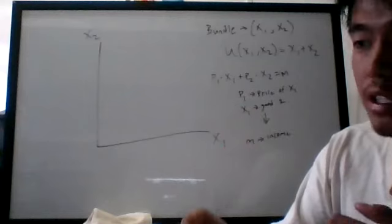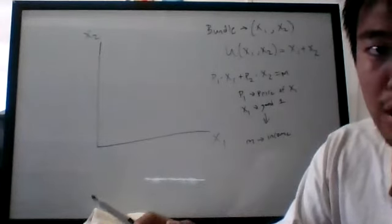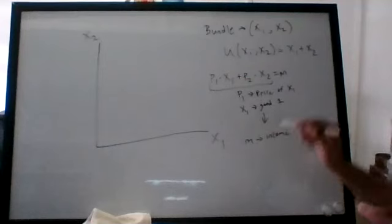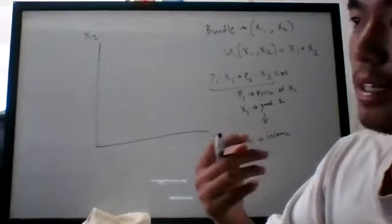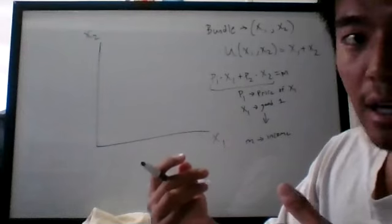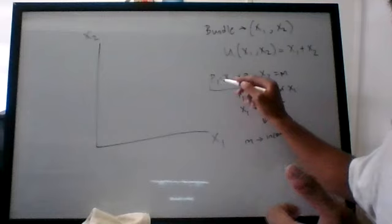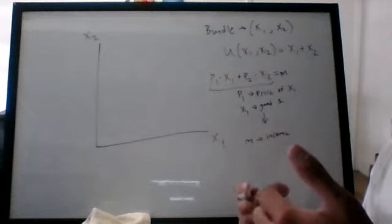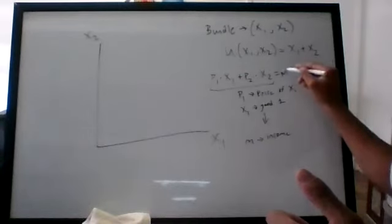In later weeks you'll see a situation where you don't spend all your money at once, but for now we assume you have one opportunity to spend everything you have. So the combination of x1 and x2 is going to equal the amount of money we have. I'd recommend just reading out any equation to make sense of it: the price of the first good times the number of units plus the price of the second good times the amount of the second good equals m.